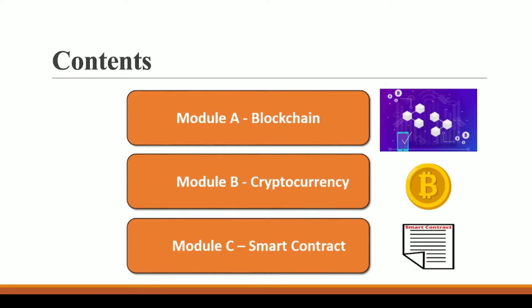I have divided this full blockchain course into three modules. Module A will be all about blockchain — how blockchain works, why we need to study blockchain. Module B will be all about cryptocurrencies — what are cryptocurrencies, what is the difference between a token, a coin, and a protocol. Then Module C will cover smart contracts — what is a smart contract and where do we deploy our smart contract.